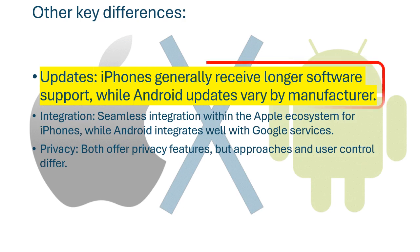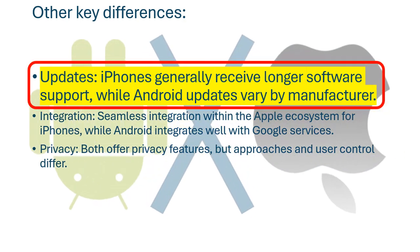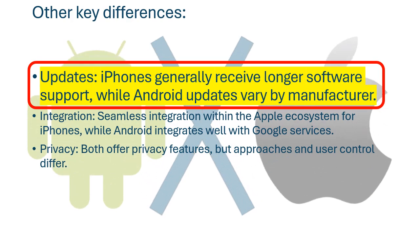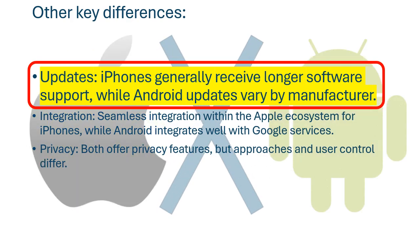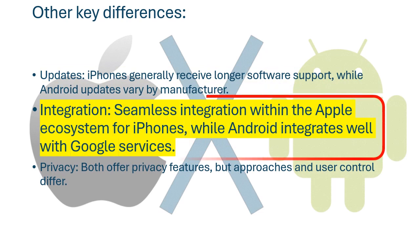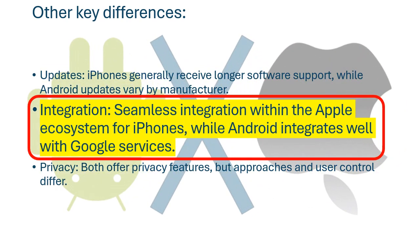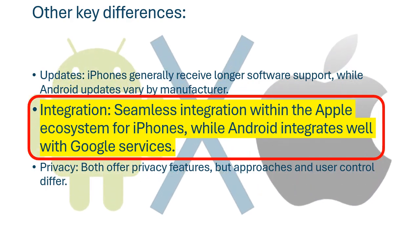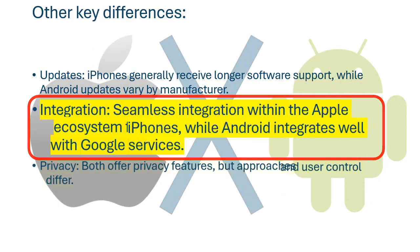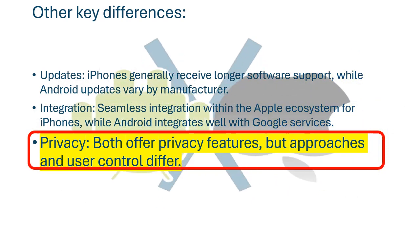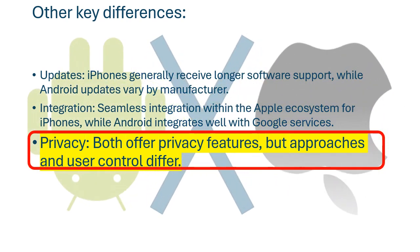Other key differences — Updates: iPhones generally receive longer software support, while Android updates vary by manufacturer. Integration: seamless integration within the Apple ecosystem for iPhones, while Android integrates well with Google services. Privacy: both offer privacy features, but approaches and user control differ.